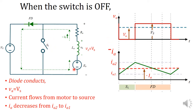When switch S1 is off, the armature current is transferred to the freewheeling diode and to the source. The current flows through this path; the diode gets forward biased during this interval. Since the armature terminals are connected to the power supply, the armature terminal voltage Va equals Vs. Current flows from motor to source and the armature current decreases from Ia2 to Ia1, because this current has to overcome the opposition offered by Vs.